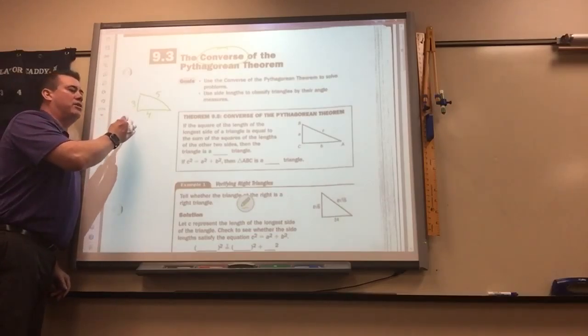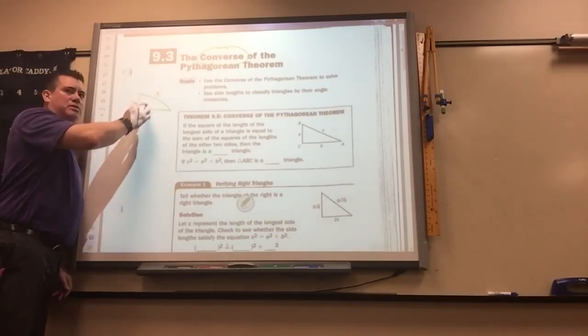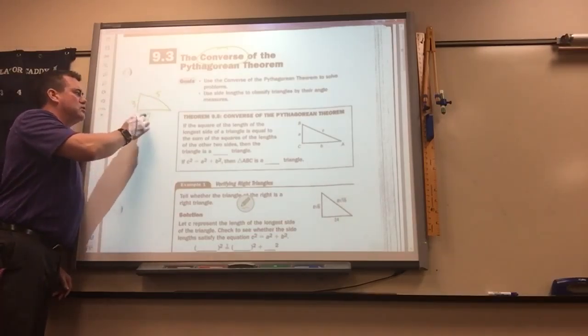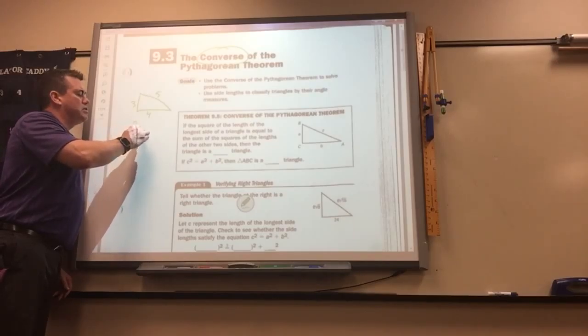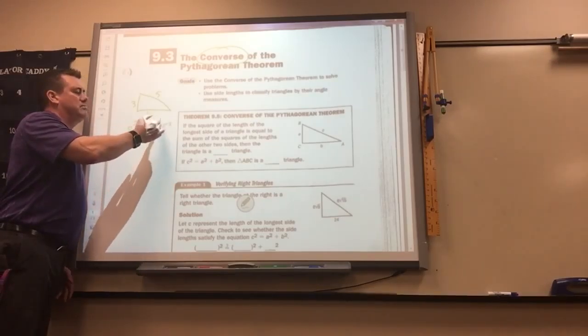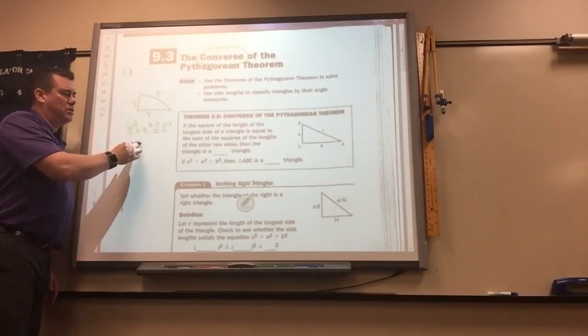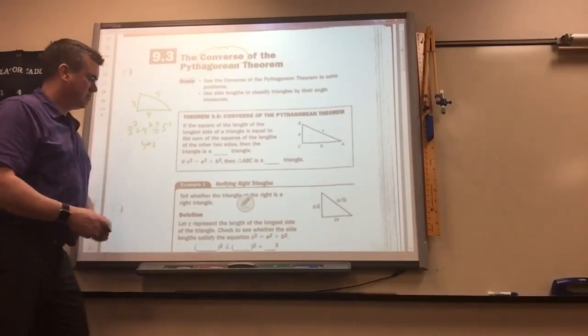So if it's a right triangle, then a squared plus b squared should equal c squared. So you've got to check, does 3 squared plus 4 squared equal 5 squared? In this case it does, so it's yes. So it is right.